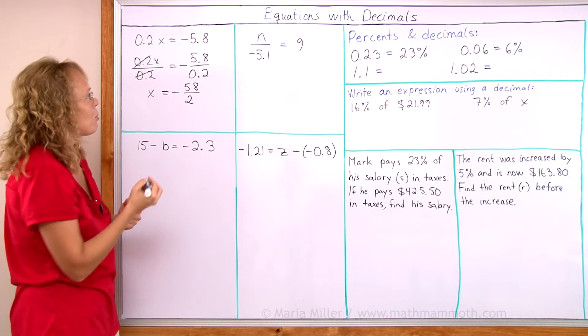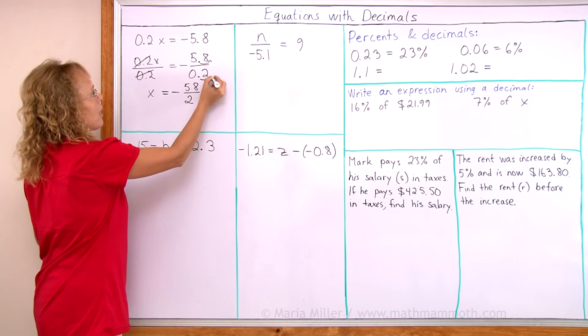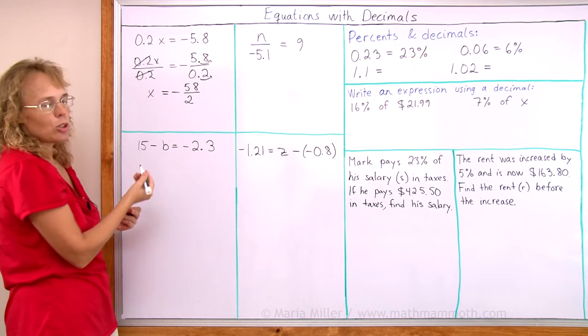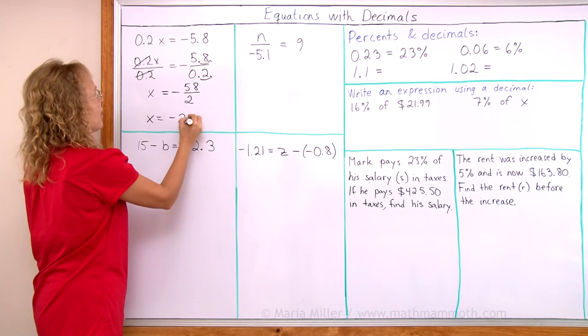The shortcut is to move the decimal point. So in both I move the decimal point one step like that, so I get 58 over 2 but negative and so x equals negative 29.